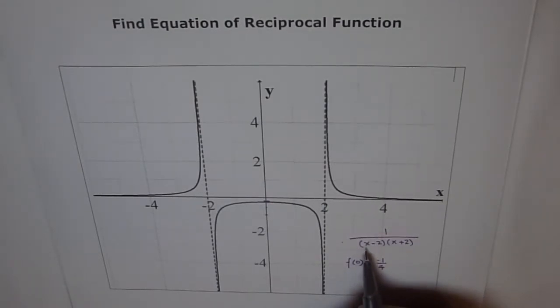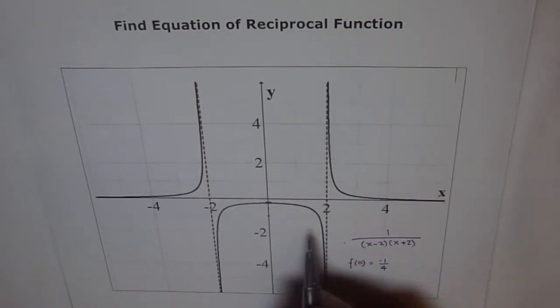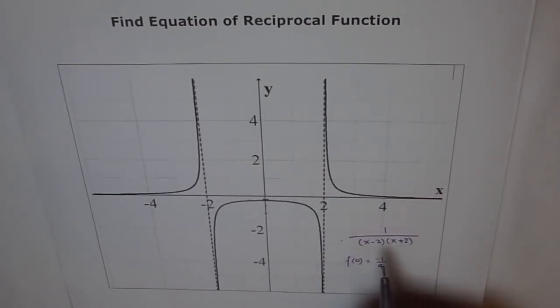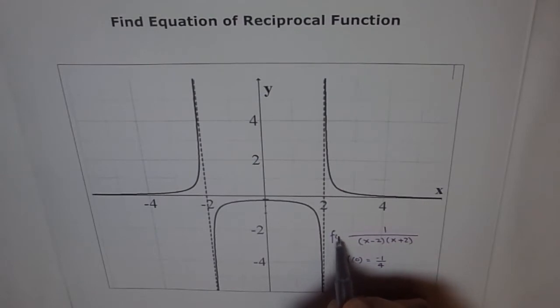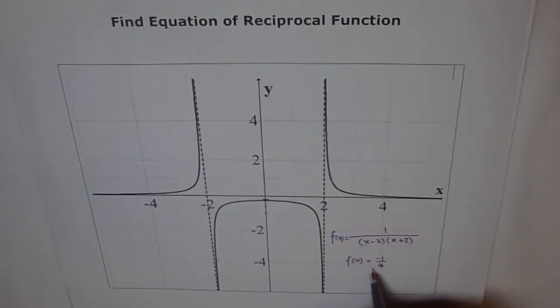Now, here, if I put x equals to 0, I get minus 2 times plus 2 as 4 minus. So, that satisfies. So, when these two points satisfy our condition, we could safely write, f of x equals to this. So, that seems to be a good proposition and a reciprocal function.